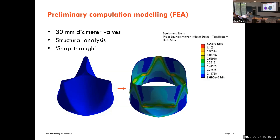After establishing the design, material, and fabrication process, we carried out computational modeling using finite element analysis. This is a simple structural analysis — no fluid applied — just to examine how the valve behaves under applied pressure, though we do plan to incorporate fluid later. We used a 30 mm diameter valve. An important concept here is 'snap-through' — the ability of the valve to fully open by bending against its natural curvature during systole.